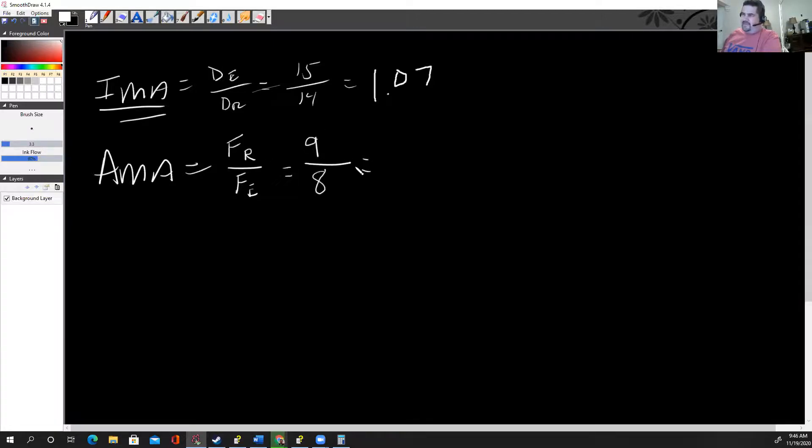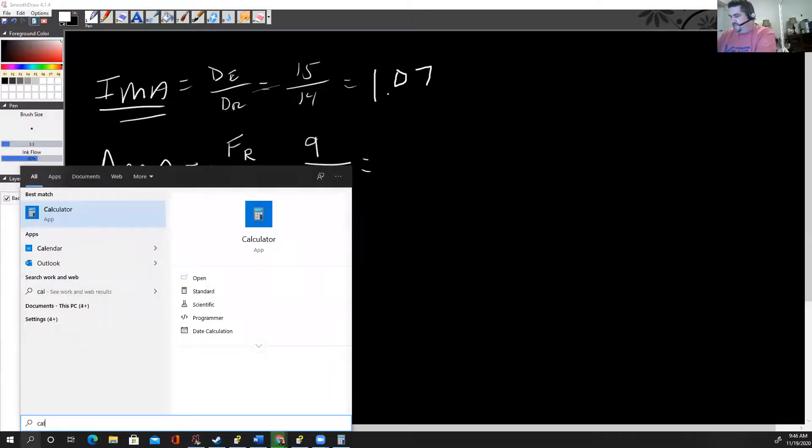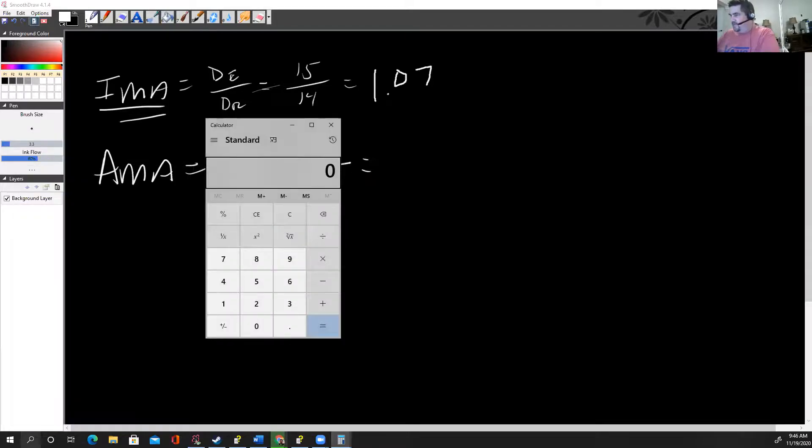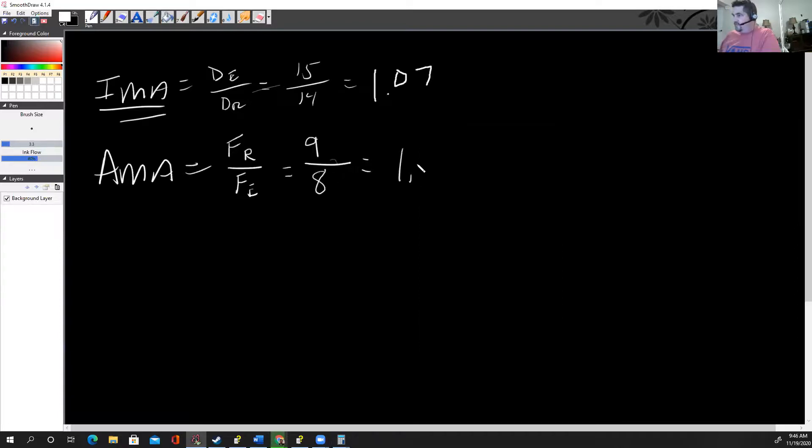There's going to be a lot of errors here, which means you might actually end up with over 100% efficiency, which is impossible. But with all our errors that's just going to happen. I do my calculations here: nine divided by eight, and I'm getting 1.125. That's the actual mechanical advantage.